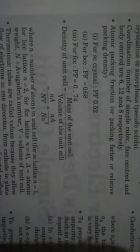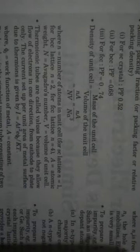Density of the unit cell is equal to mass of the unit cell divided by volume of the unit cell. The equation is Z·M upon N_A·V, which equals Z·M upon N_A·a³.